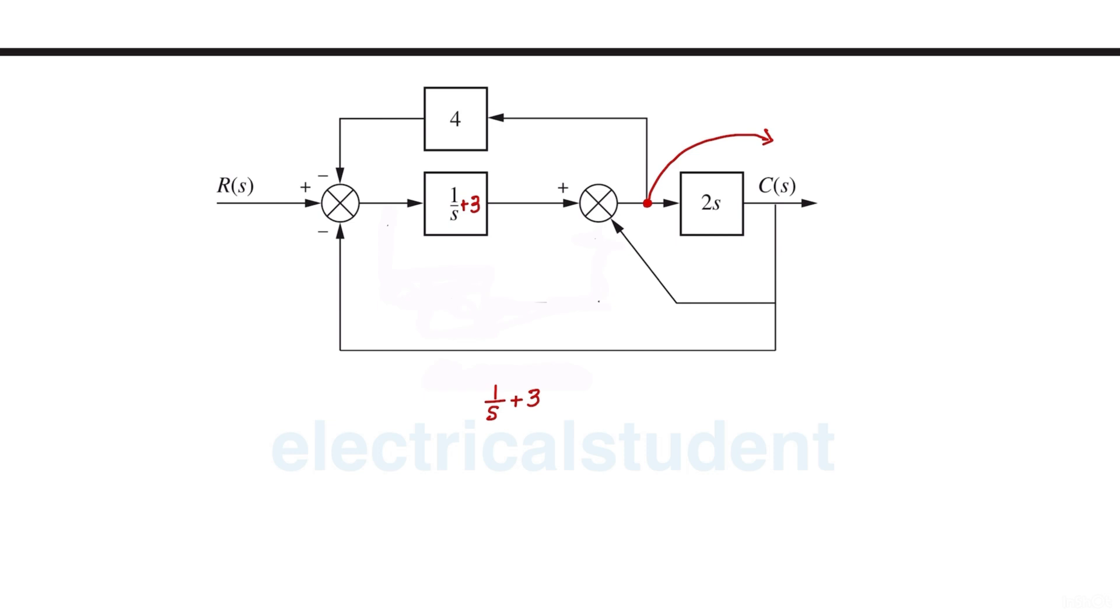If we move this takeoff point towards this direction, then this will become 4 over 2s. And this time our block diagram looks like this. So basically it is not taking off from this position, but now from this direction. It is taking off from this direction.